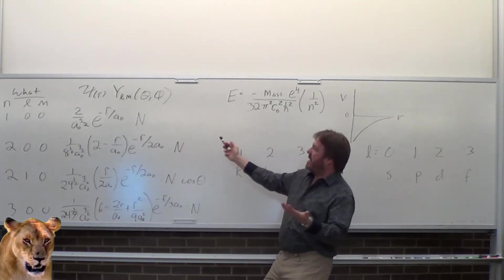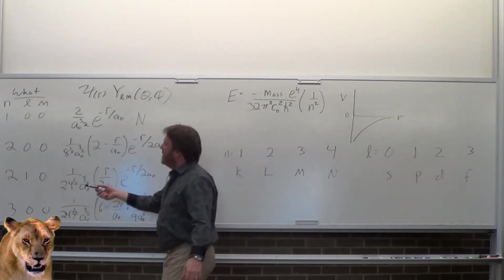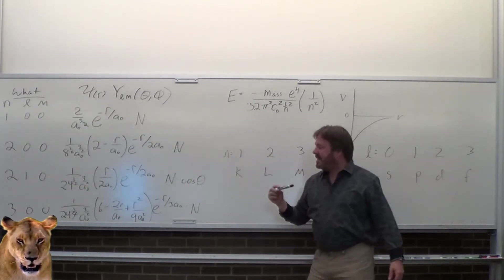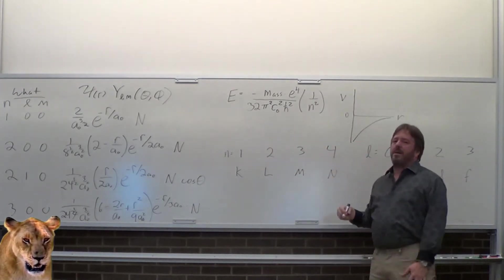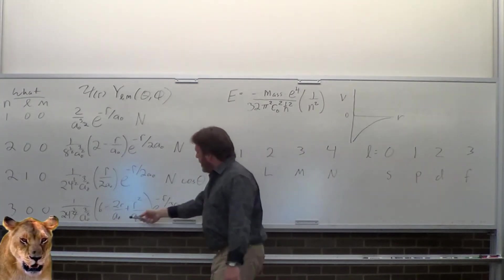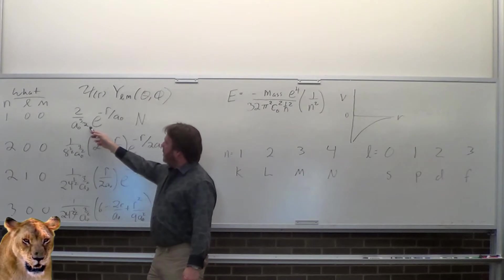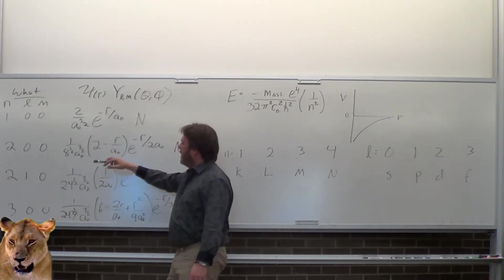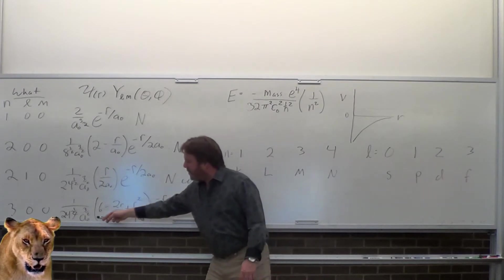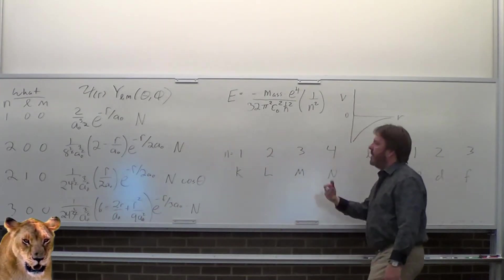For s states there's really nothing except a normalizing constant. For the 2p state — you should be able to read off m equals zero, which makes it a pz state. Z is cosine theta, and m equals zero means no phi dependence. You can also see the r to the l behavior: for p that's r to the first. Then there's the exponential die-off, and a bridging polynomial between r^l and the exponential that gives us the nodes.